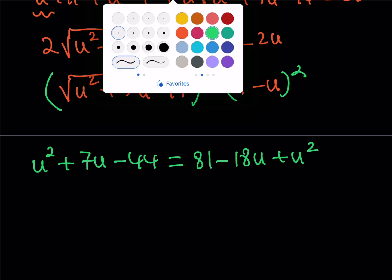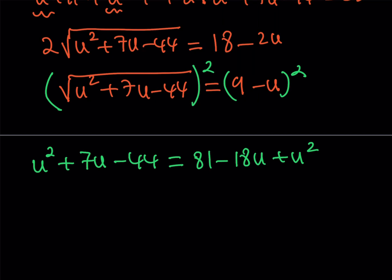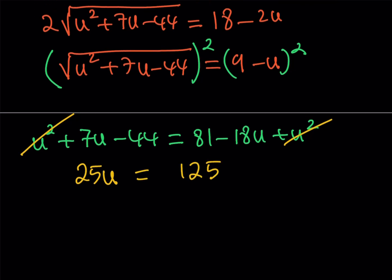Adding 18u gives 25u on the left, and adding 44 to 81 gives 125 on the right. From here we get a really nice, simple solution: u equals 5.